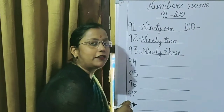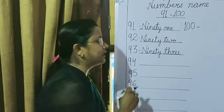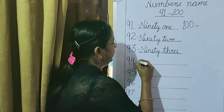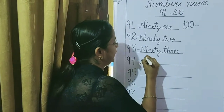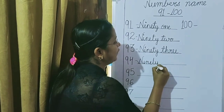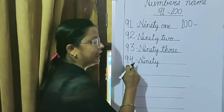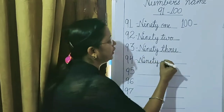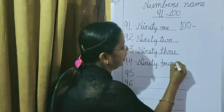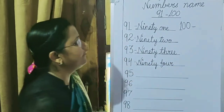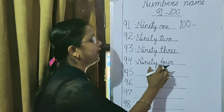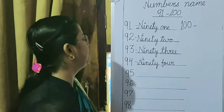After 93, which number comes? 94. N-I-N-E-T-Y for 90. Then, 4 — spelling of 4 is F-O-U-R. N-I-N-E-T-Y plus F-O-U-R gives us 94.